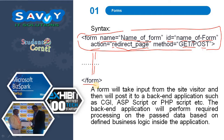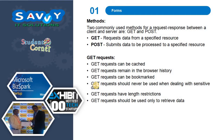The backend application will perform required processing on the passed data based on defined business logic inside the application. Two commonly used methods for a request-response between a client and server are GET and POST. GET requests data from a specified resource. POST submits data to be processed to a specified resource.